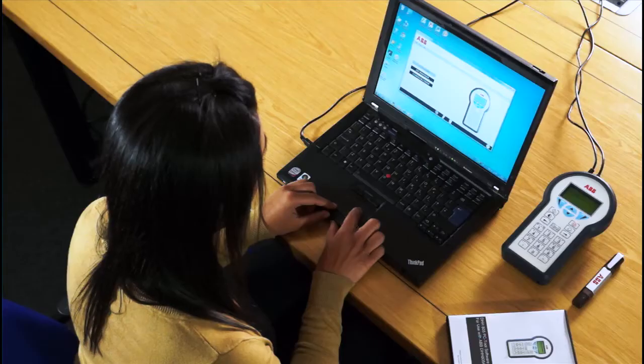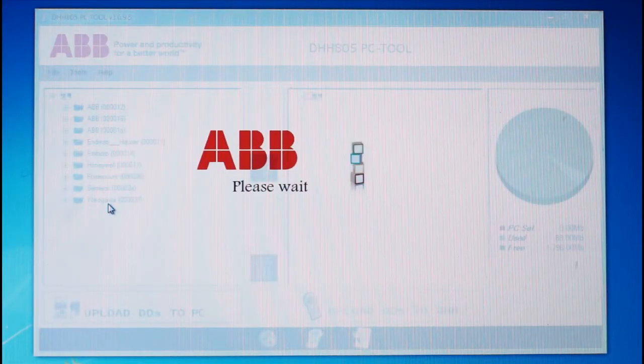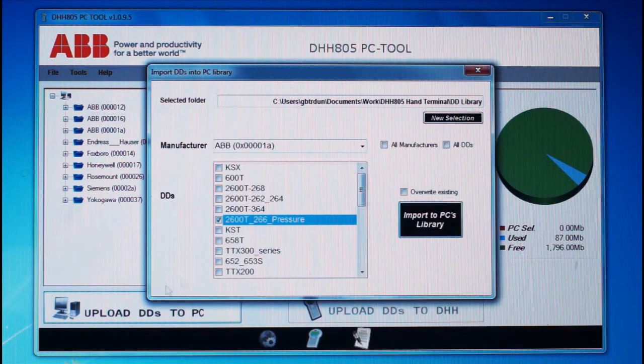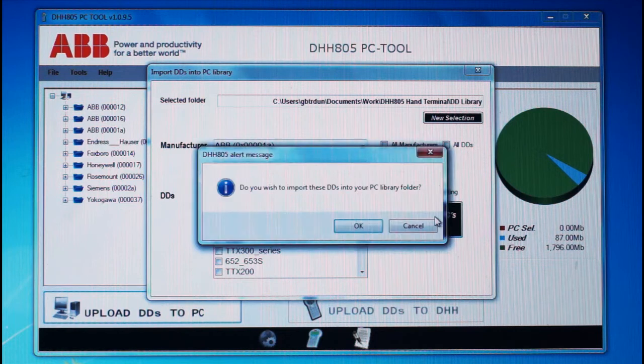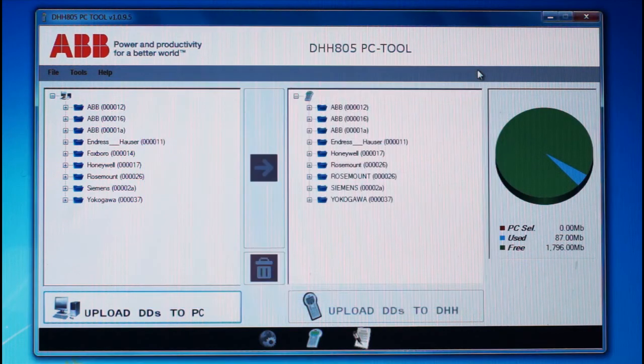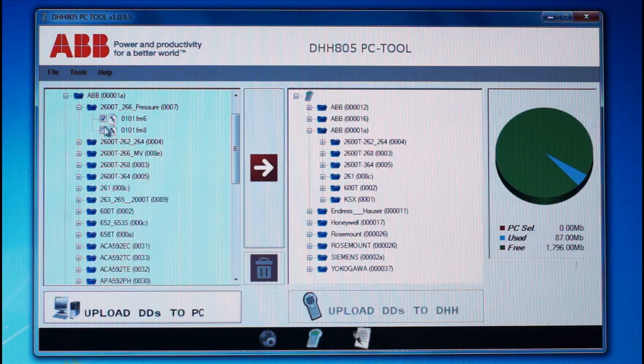After activating the device, you can then start to upload the HART device descriptions you need. If there's a device description you need that isn't on the DVD, don't panic. Download it from the HART Foundation website free of charge and upload it to your DHH805 using the PCTool software. It really is that easy.